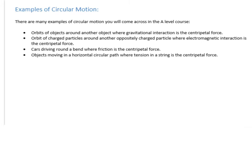Another example is atomic structure, where electrons orbit a nucleus — the electromagnetic interaction provides the centripetal force. There are also cars driving around a bend: if they maintain their speed, friction provides the centripetal force. You'll look at examples like a velodrome, where they tilt the floor to allow faster speeds. Finally, there's an object on a string moving in a horizontal or vertical path — you'll explore why vertical path motion isn't true circular motion.